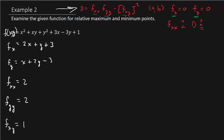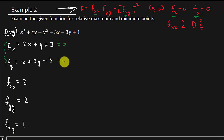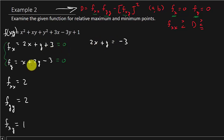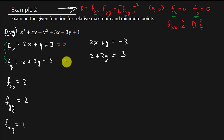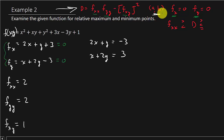Now we need to set each of the first partials equal to zero. We've got to set 2x plus y plus 3 equal to zero and x plus 2y minus 3 equal to zero. So we get 2x plus y equals negative 3, and x plus 2y equals 3. What we have now is just a system of equations to solve — hopefully you remember how to do that. Some of these can get messy, but this one is not difficult at all.